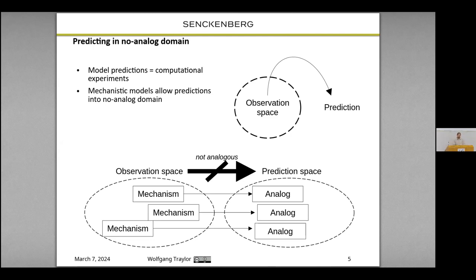When we want to predict into no-analog space, that could mean, for example, into the future under climate change scenarios. Or in my case, because I've worked with that in the past as a paleoecologist, many thousands of years into the past. And here the mechanistic models shine because they can, even if there is no direct analog in our modern world, still represent analogous mechanisms that we find in current situations as we find them in past or future situations.